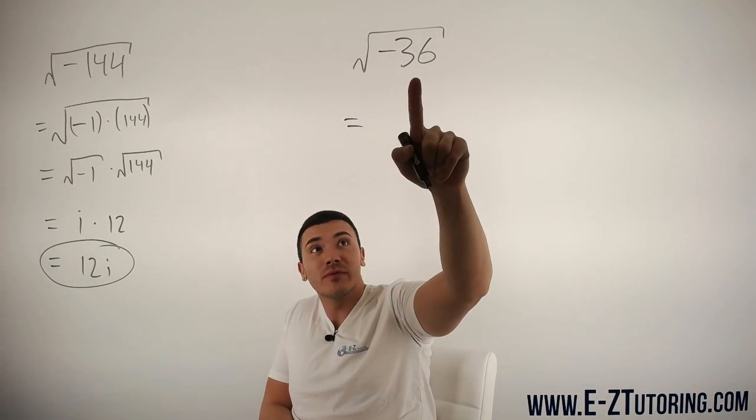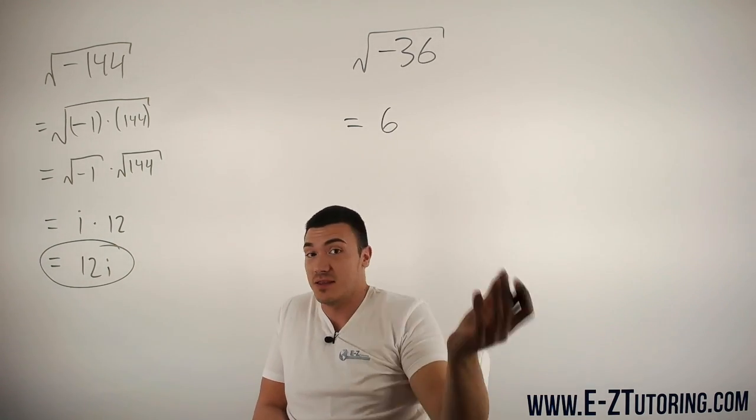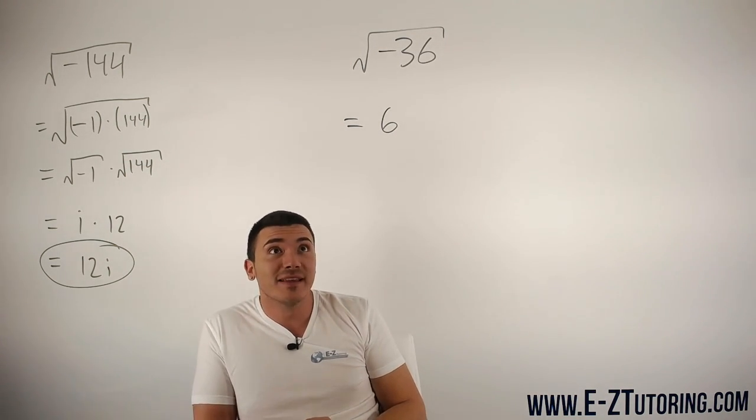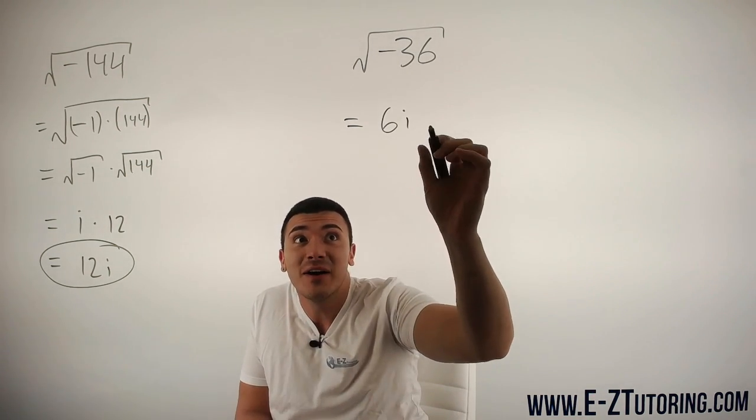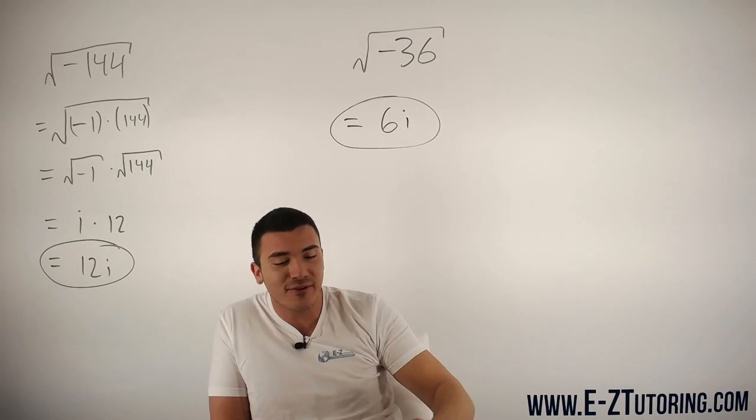The square root of 36 is just six, because six times six is 36. We have a negative inside the square root, so we just add an i and we're done. 6i is our answer.